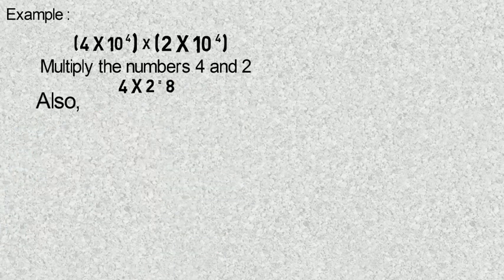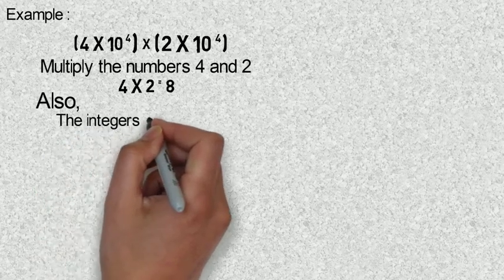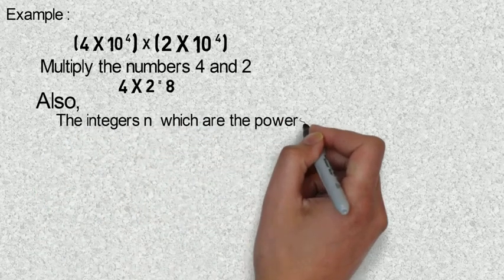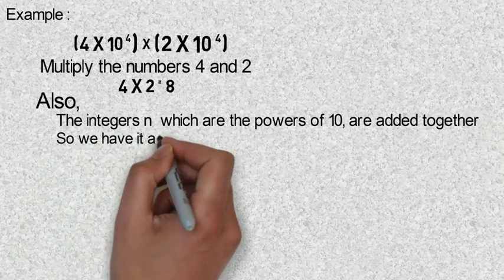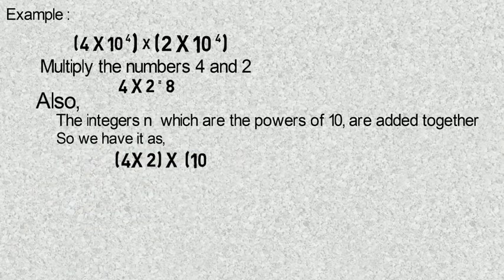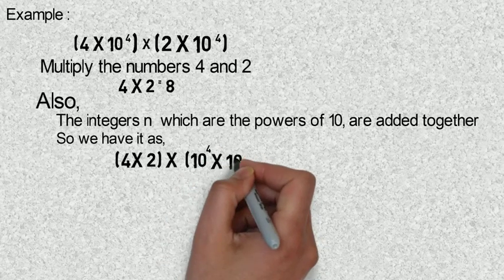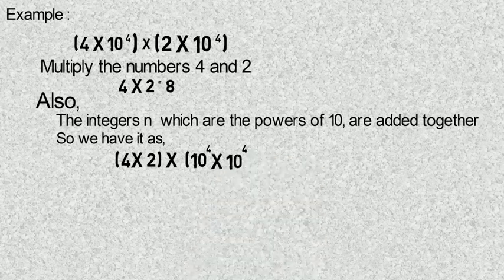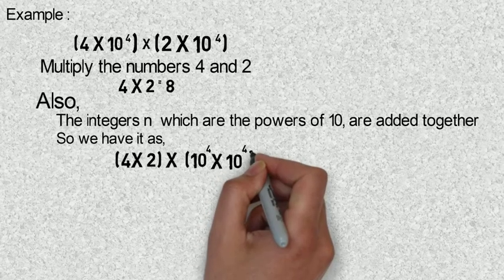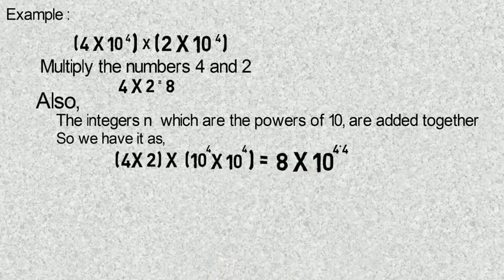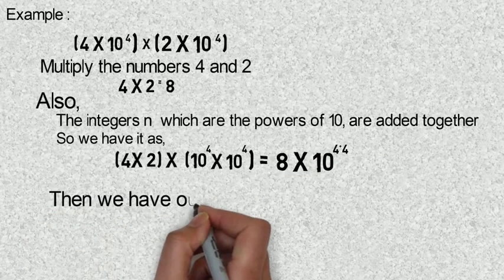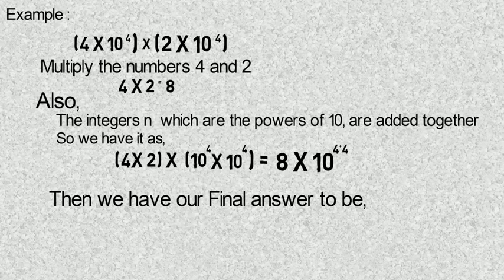Since the indices are the same — four and four — and we are dealing with multiplication, recalling the rules of indices, when multiplying powers we add them. So four plus four gives us eight as our index. This gives our final answer as eight times ten raised to power eight.